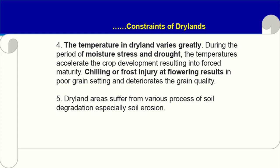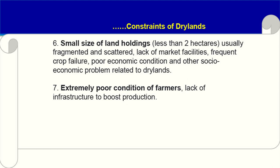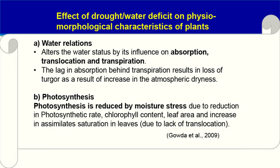Dryland areas suffer from various processes of soil degradation, especially soil erosion — a lot of soil is lost by wind or water. Small land holdings of less than 2 hectares, usually fragmented and scattered, lack of market facilities, frequent crop failure, and poor economic conditions are other socio-economic problems. Extremely poor condition of farmers and lack of infrastructure further impede production. Lot of physiological changes occur due to excess temperature, water deficit, or drought in those areas.